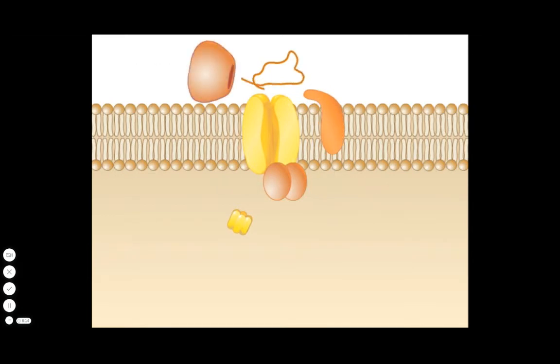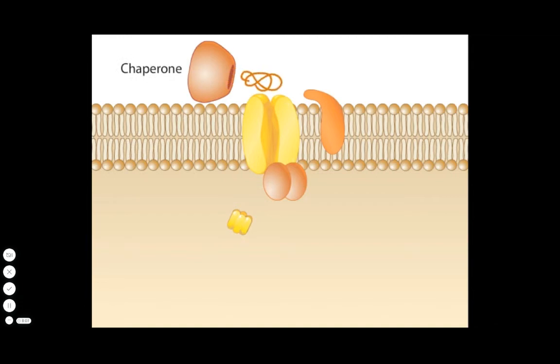Periplasmic proteins delivered by the Sec system arrive unfolded and inactive, and require periplasmic chaperones to guide their tertiary folding.